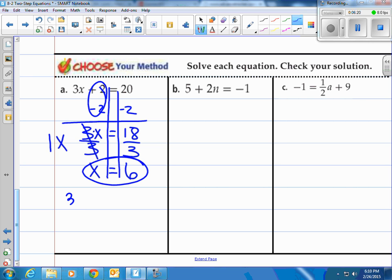So the inverse is dividing by 3. That becomes 1x, and 1 times x is x. Remember, we're trying to isolate the variable. So 18 divided by 3 is 6. Go to check it. 3 times 6 plus 2. Does that equal 20? Sure does.